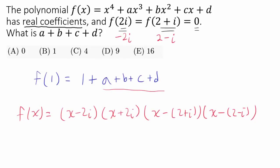Because f(1) is going to be (1 minus 2i) times (1 plus 2i) times, when x is 1, we have 1 minus 2 minus i, which is negative 1 minus i. When x is 1, we have 1 minus 2 plus i, or negative 1 plus i.